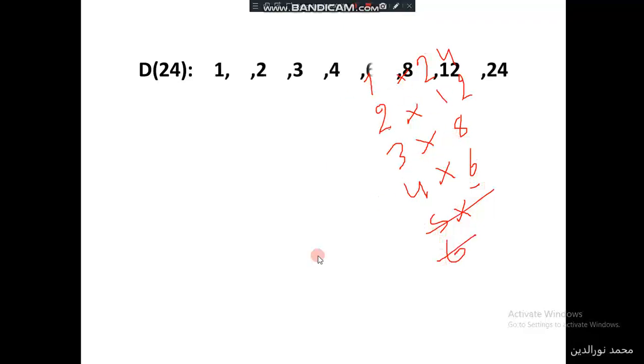To find the divisors of 24, we have to find the factors of 24, which are 1 times 24, 2 times 12, 3 times 8 is 24, 4 times 6. 5 is cancelled, 6 is written here, so stop. Those are the divisors of 24: 1, 24, 2, 12, 3, 8, 4, and 6.